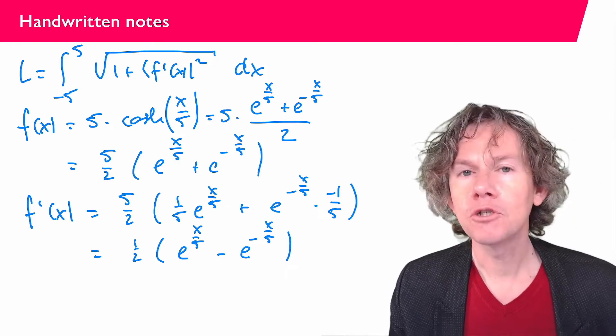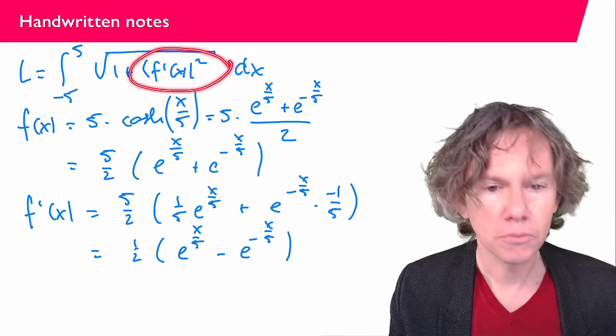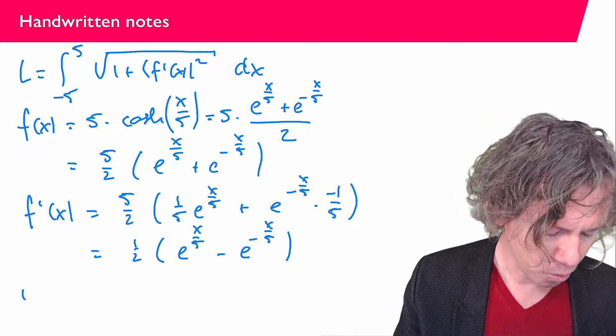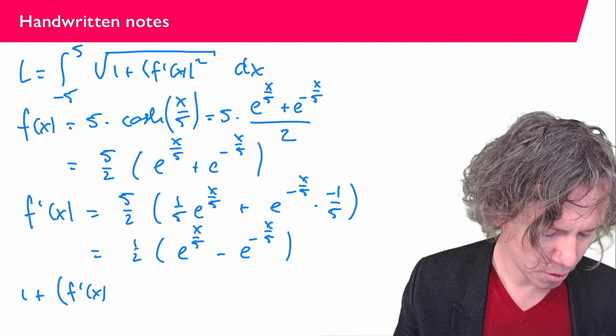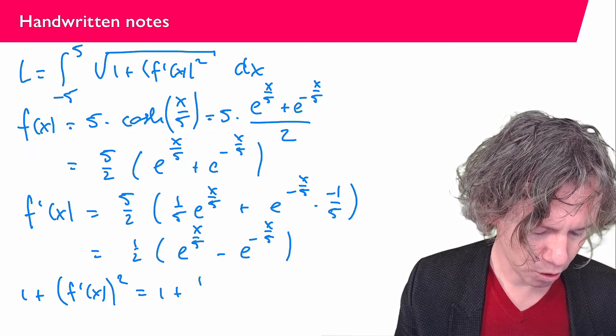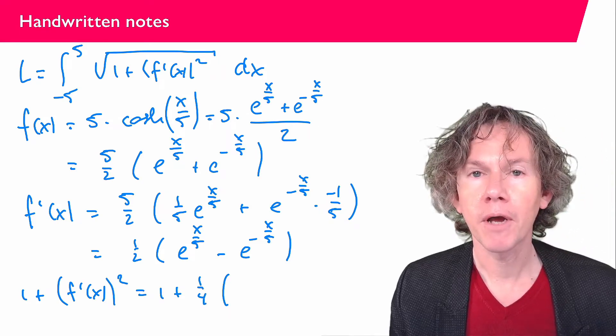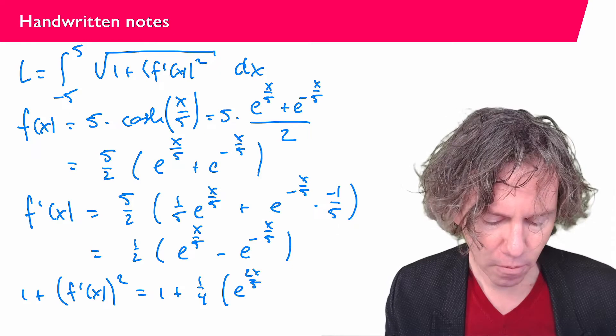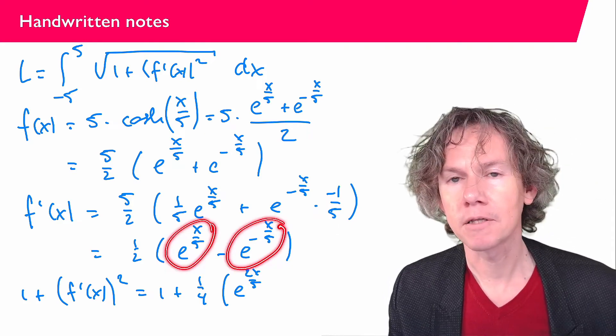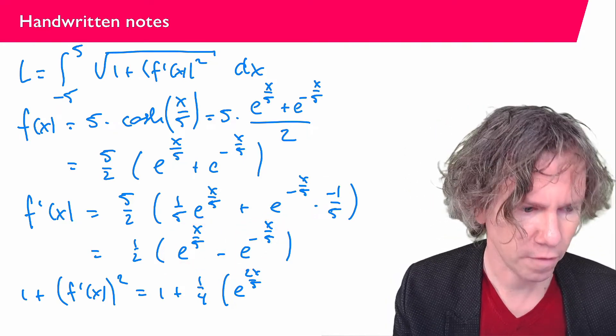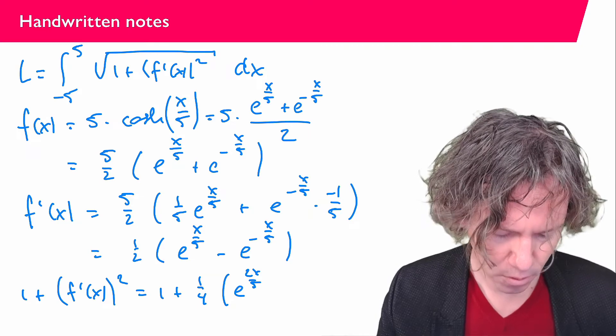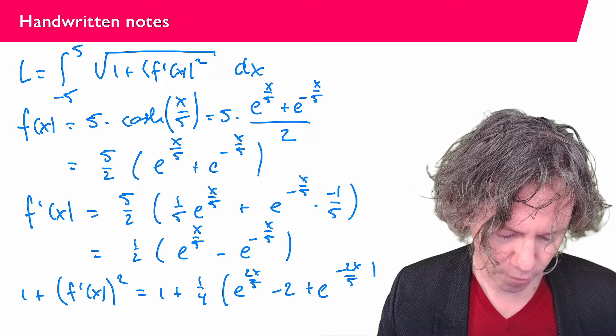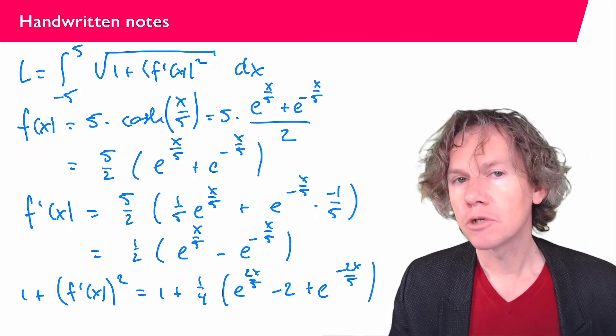Now, in our integral we have f prime squared plus 1. So let's try and compute that first. 1 plus f prime of x squared equals 1 plus 1 over 4. e to the power x over 5 squared is going to be e to the 2x over 5. Then if I compute this times this, I get e to the power 0, which is 1, and I get that twice. So I have minus 2. And then finally plus e to the power minus 2x over 5.